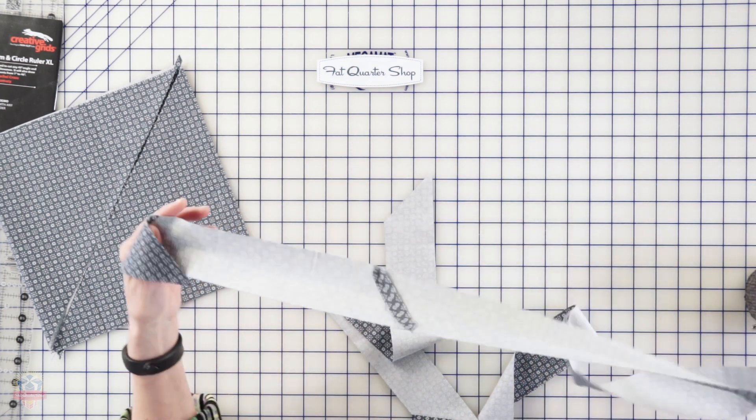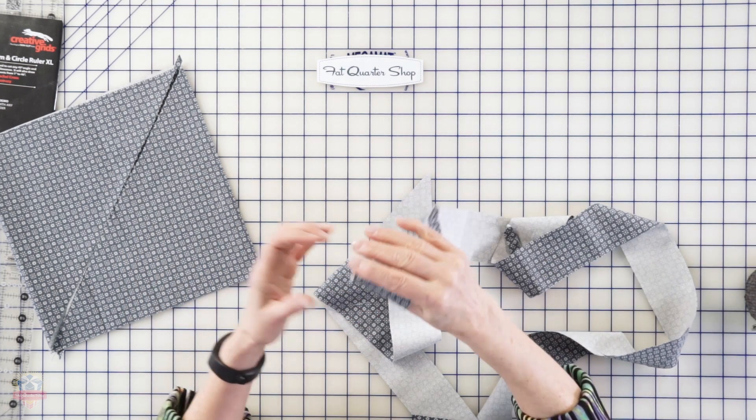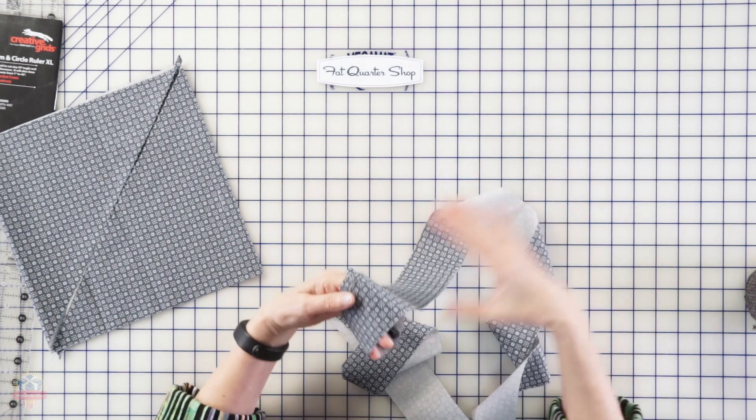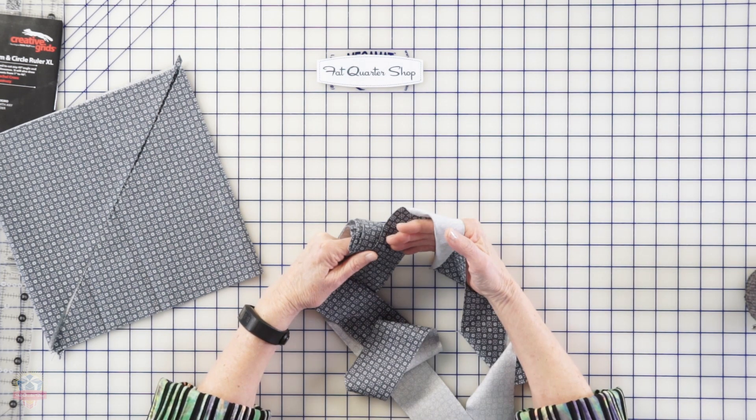I'll usually then just take my binding and roll it up and set it aside so it's ready to go when we're ready to bind our bag. Let's move on next to pockets.